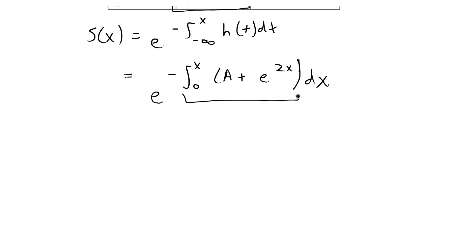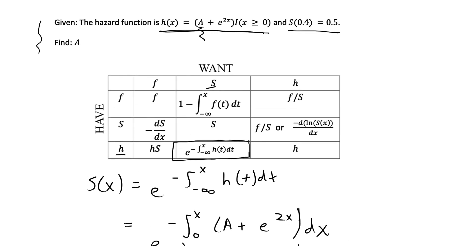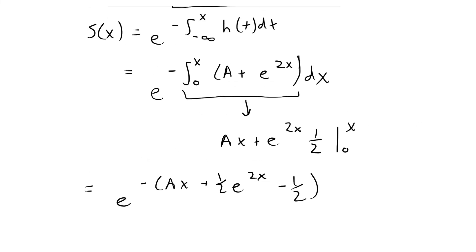This integral evaluates to ax + (1/2)e^(2x), evaluated from 0 to x. Plugging that into the full equation gives S(x) = e to the negative (ax + (1/2)e^(2x) − 1/2). From here, I plug in x = 0.4, which we know, and we also know that S(0.4) = 0.5. With x plugged in, we have everything needed to solve for a.